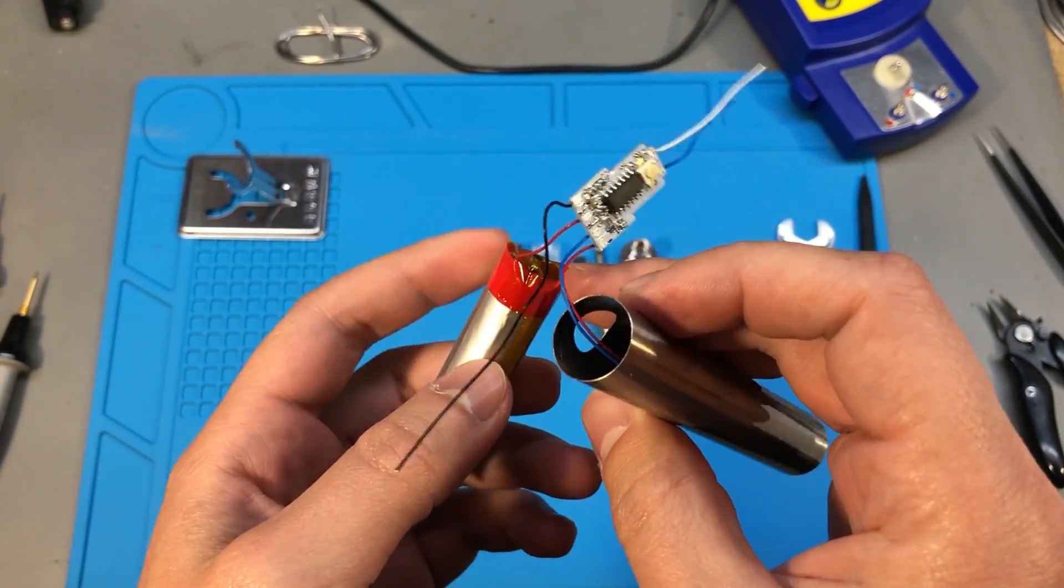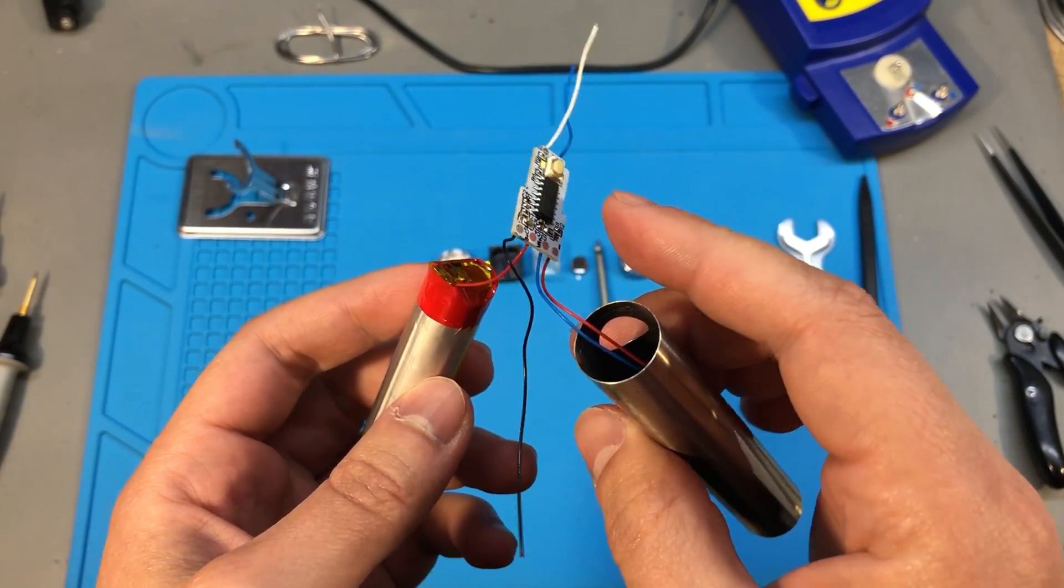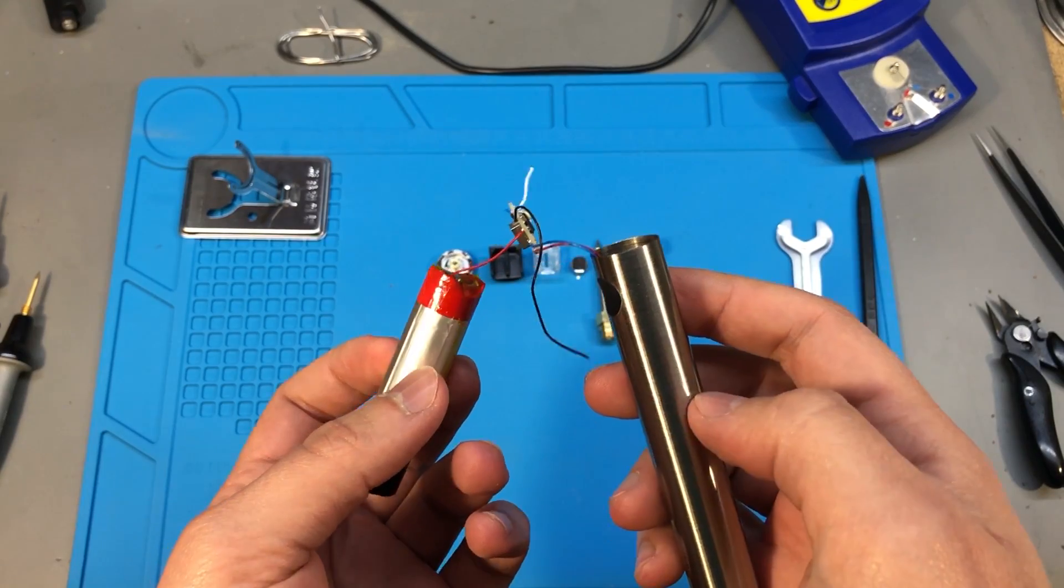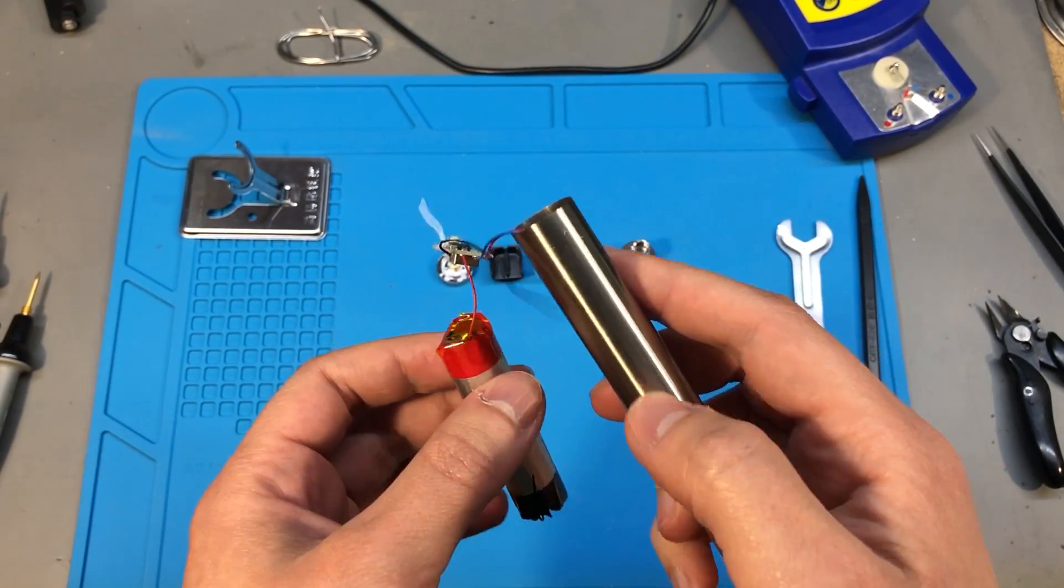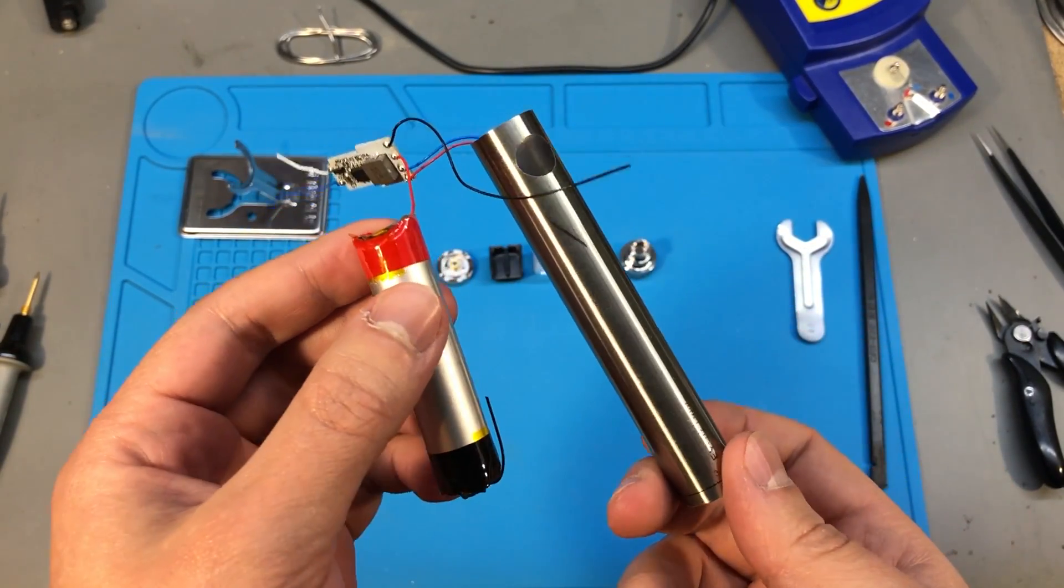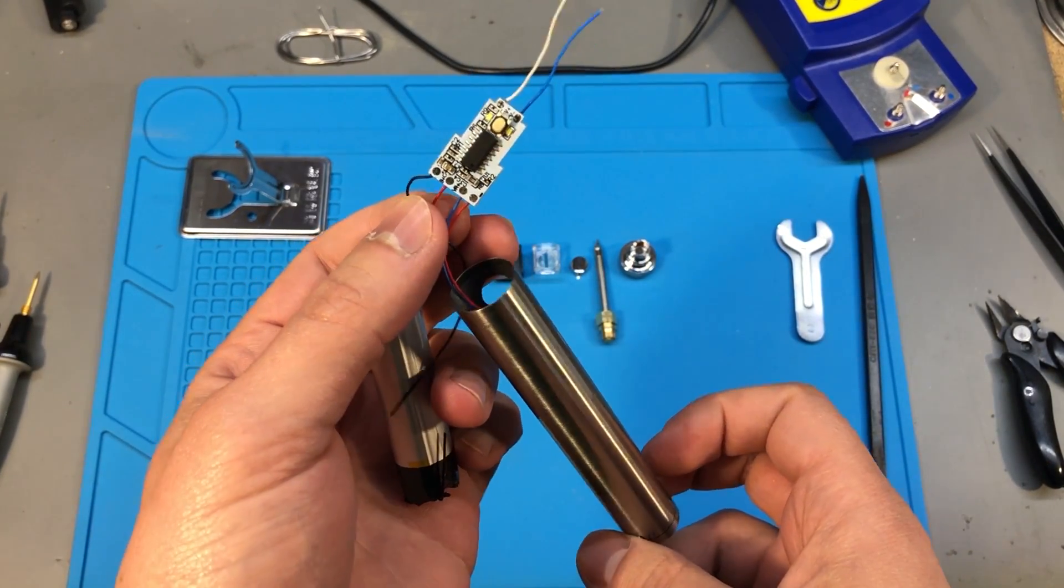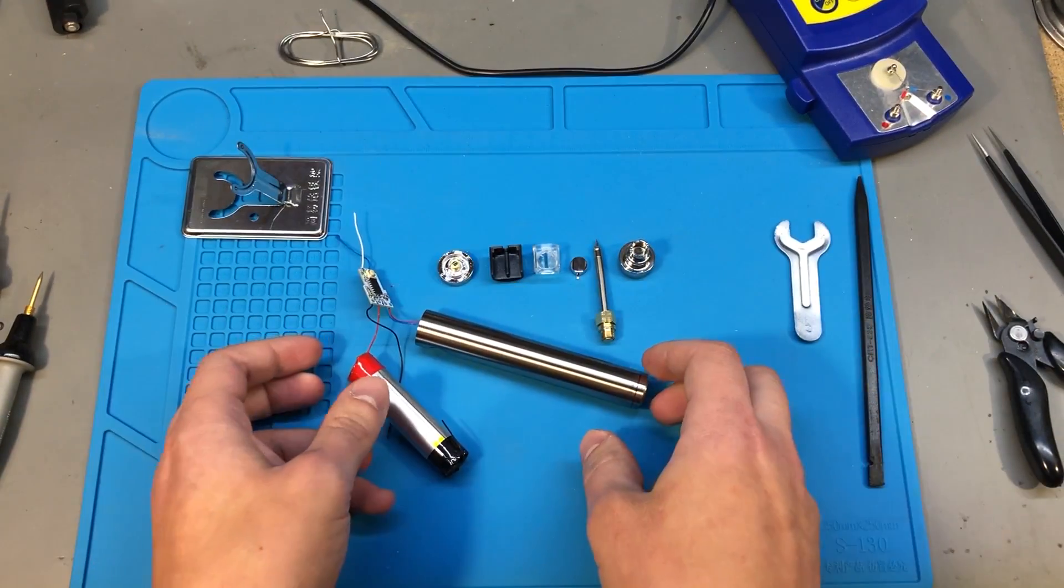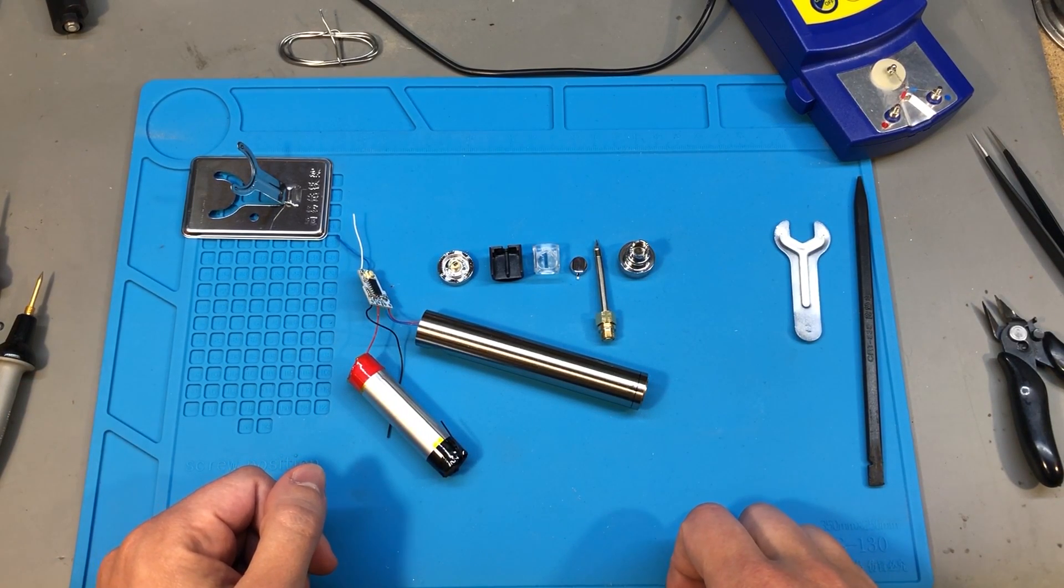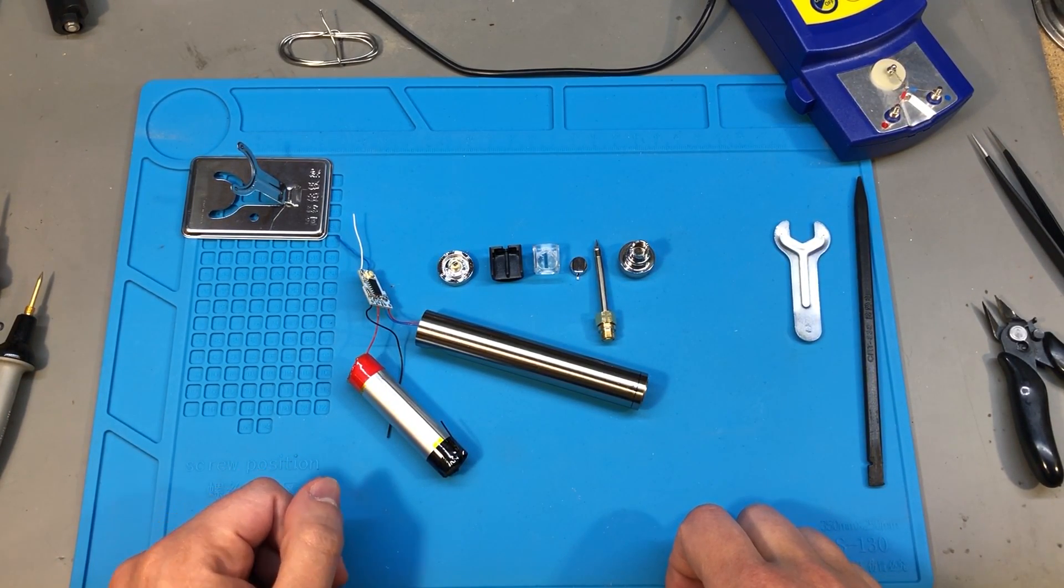So this might be repairable by replacing that small MOSFET, but am I going to do it? No, because I don't think it's worth the trouble. This obviously has some quality and maybe design issues which caused that MOSFET to fail. It certainly looked like a very interesting soldering iron in the beginning but quickly turned into a fail when I started using it.